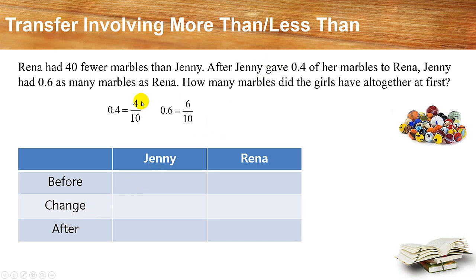Jennie gives away 4 out of 10 of her marbles. If Jennie gives away 4 out of 10, can you guess how many units Jennie had at first? It's simply 10 units, because 4 out of 10 means 10 units at first. Jennie gives 4 units away — that's minus 4 — and 10 minus 4 gives you 6 units.